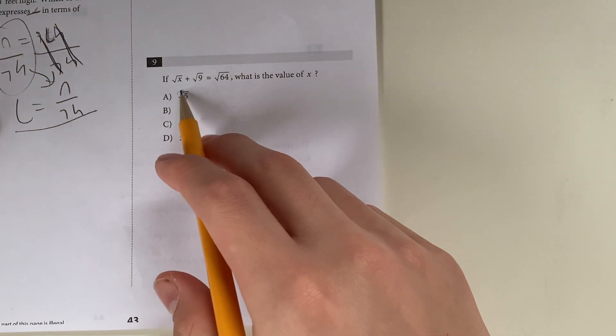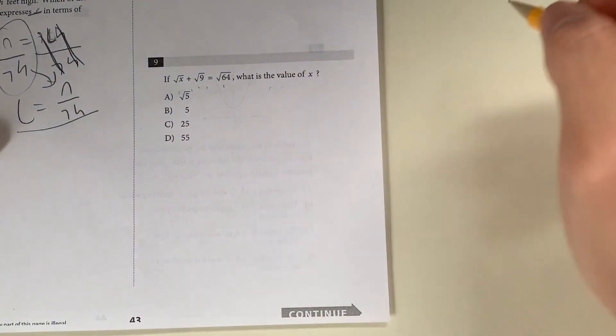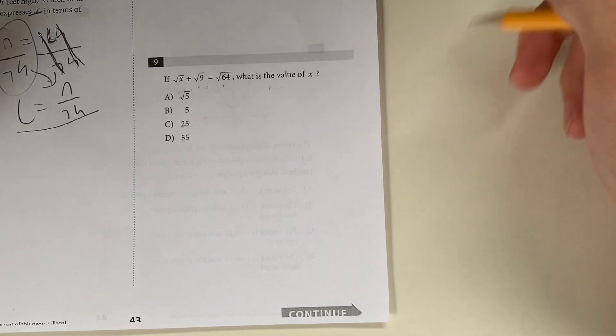Question 9. If the square root of X plus the square root of 9 equals the square root of 64, what is the value of X? This question is pretty interesting because it's actually pretty easy.